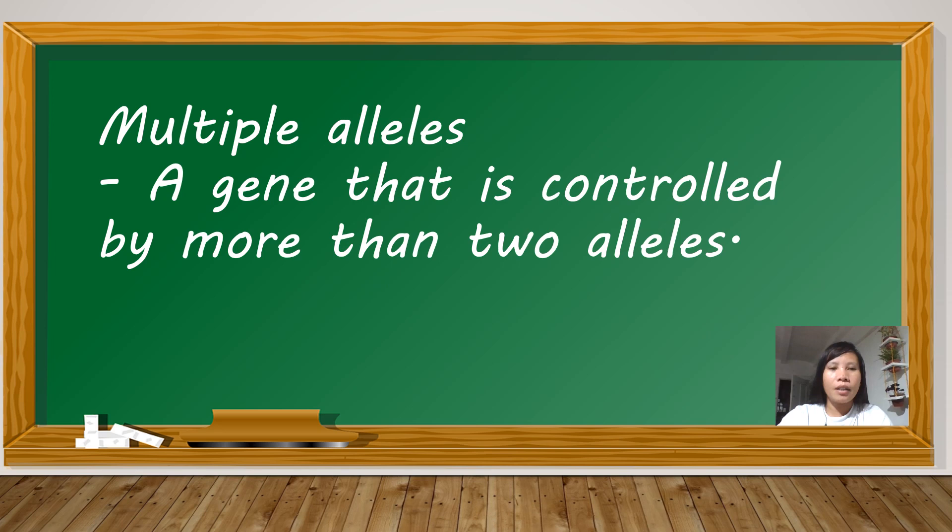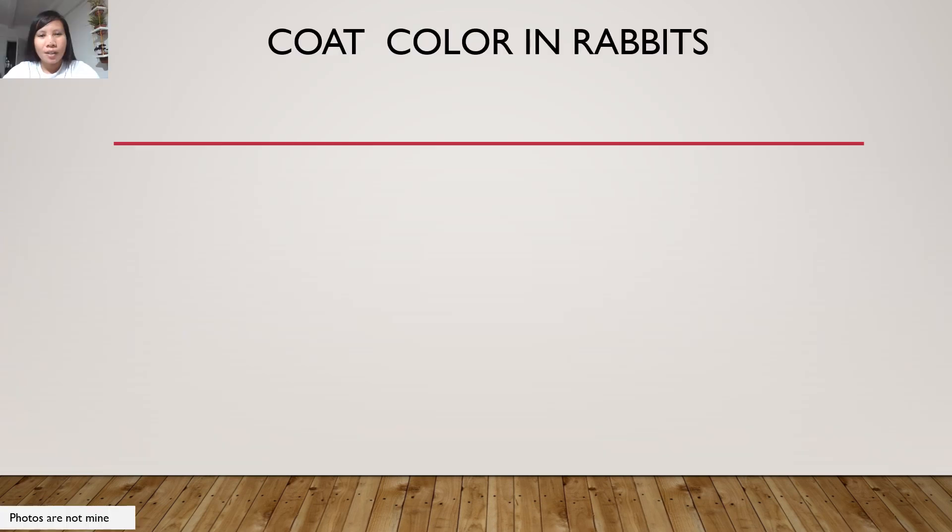Let us first define what is multiple allele. Multiple alleles is a gene that is controlled by more than two alleles. A perfect example of multiple alleles is the alleles that control the coat color in rabbits.